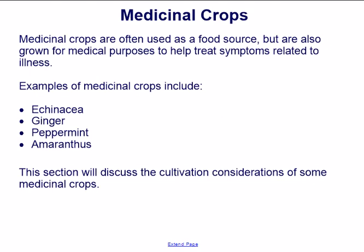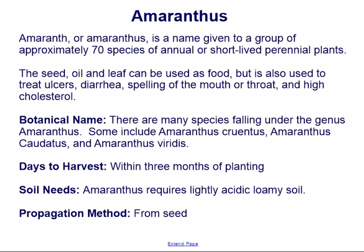Amaranth, or amaranthus, is a name given to a group of approximately 70 species of annual or short-lived perennial plants. The seed, oil, and leaf can be used as food, but it is also used to treat ulcers, diarrhea, swelling of the mouth or throat, and high cholesterol.